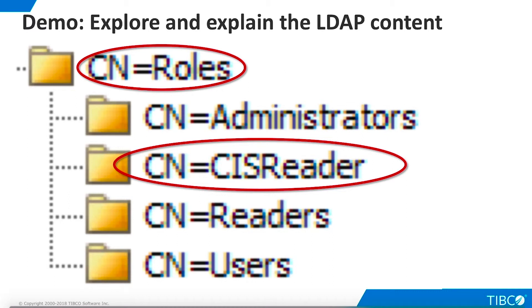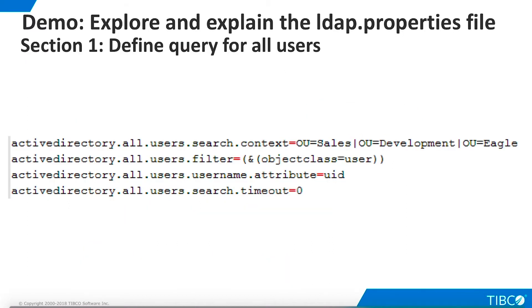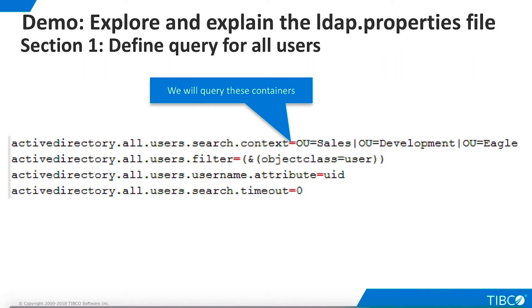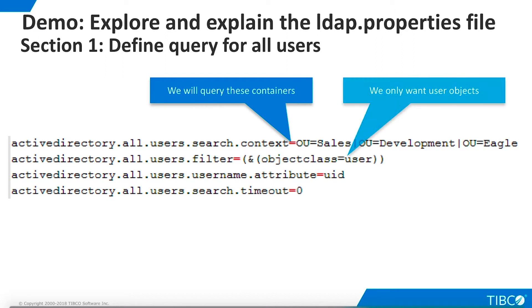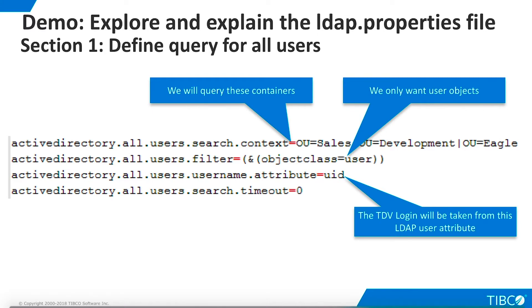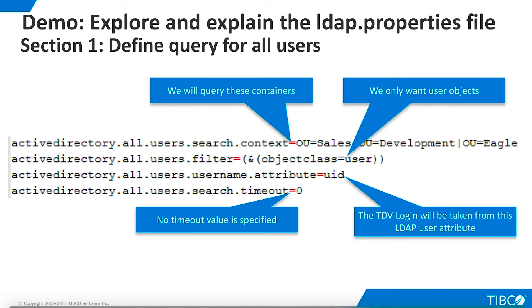Now that we understand the structure of our specific LDAP directory, let's see how the TDV LDAP.properties file has been configured to use this directory. The properties file contains four sections. Section 1 defines the query parameters TDV will use to find all users. We specify that TDV should search three organizational unit containers — Sales, Development, and Eagle — and that we are only interested in user objects. We choose the UID attribute as the one that will be used as the TDV login. We specify no timeout period for the query.